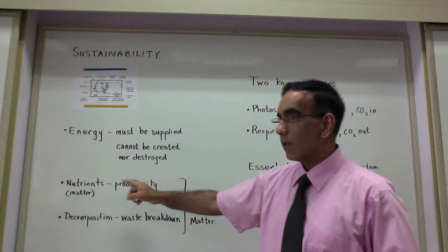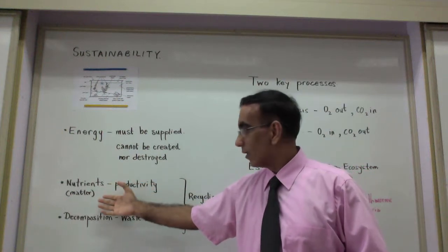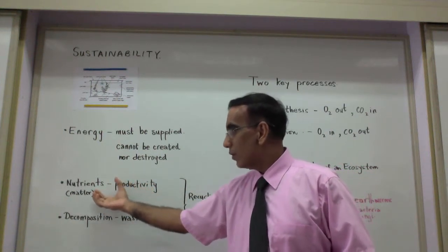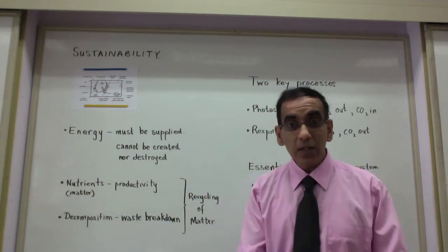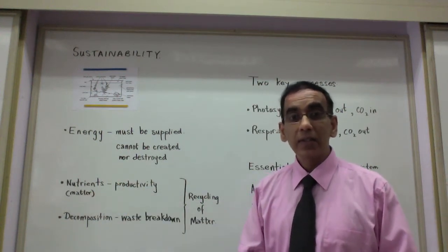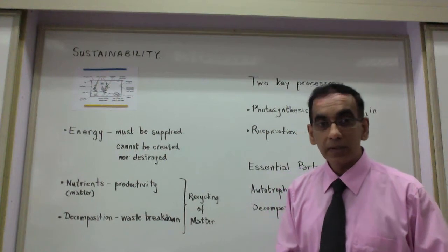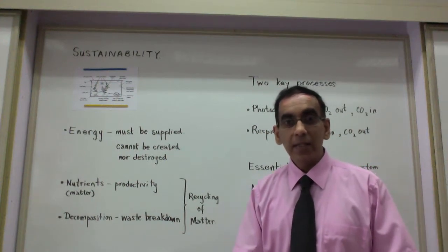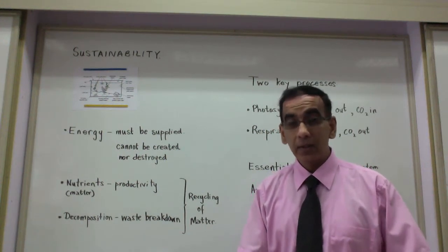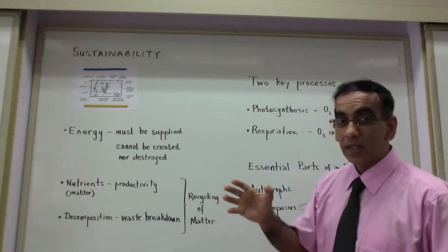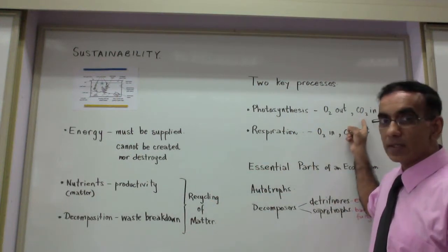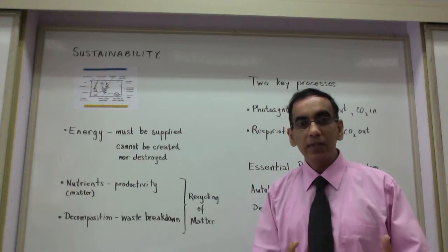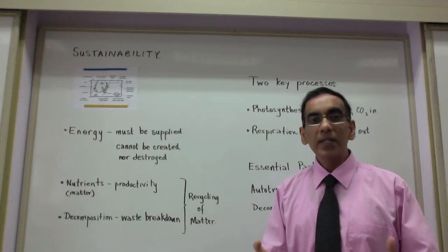These autotrophic organisms produce nutrients, and these nutrients, and a continuous supply of these nutrients, is an absolute requirement. So when plants take up nutrients from the soil, or carbon dioxide from the air in photosynthesis, these nutrients need to be recycled.